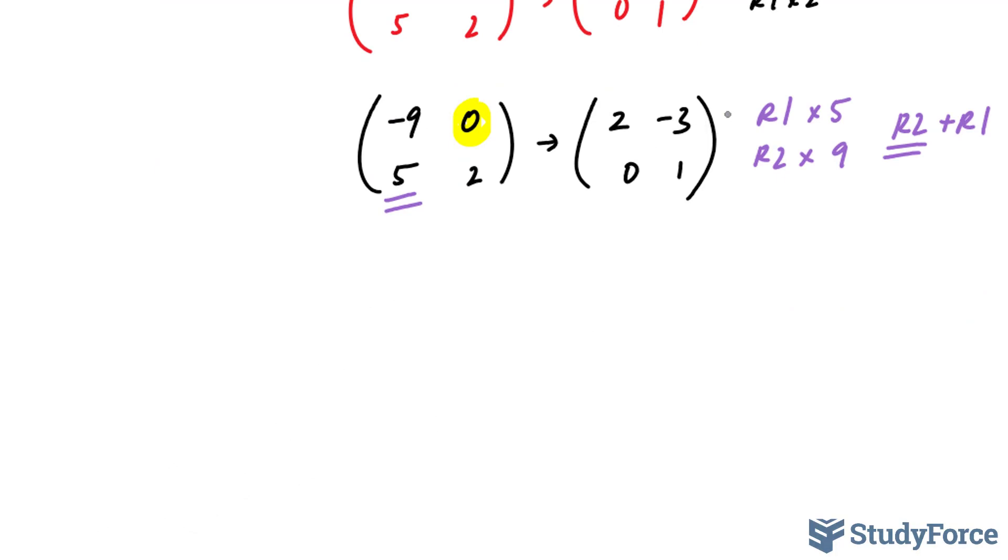So let's rewrite row 1, since it's not going to change: negative 9, 0, 2, and negative 3. If I multiply row 1 by 5 and row 2 by 9 and add them up, I will get 0 here. If I multiply this element by 5, I get 0, and this element by 9, I get 18. 18 plus 0 is 18.